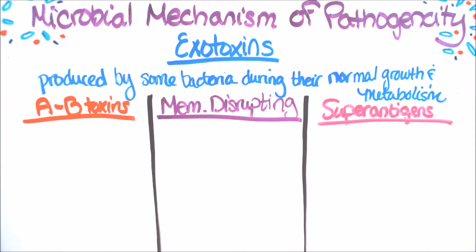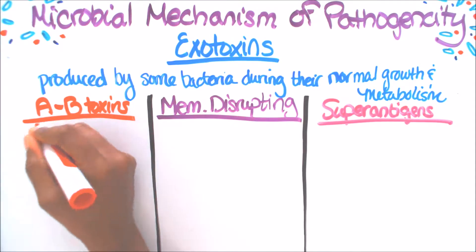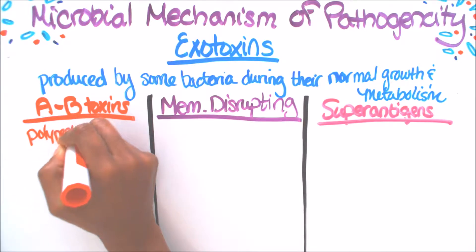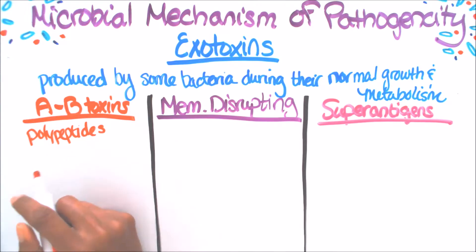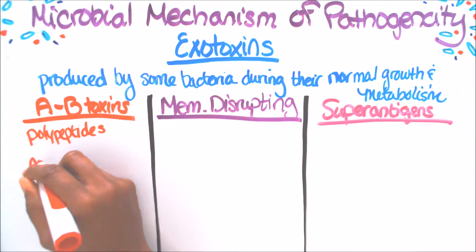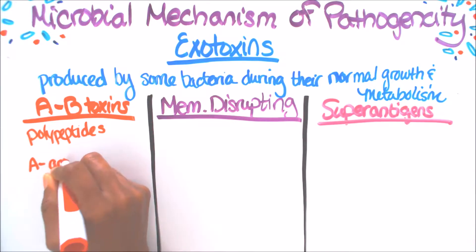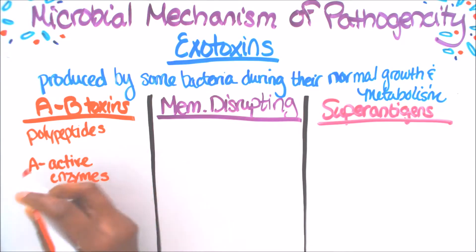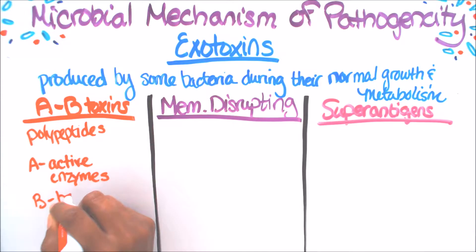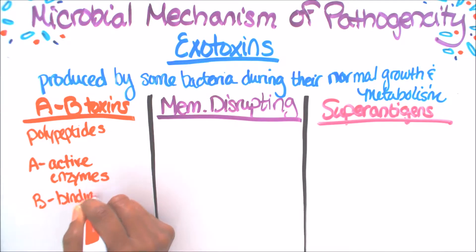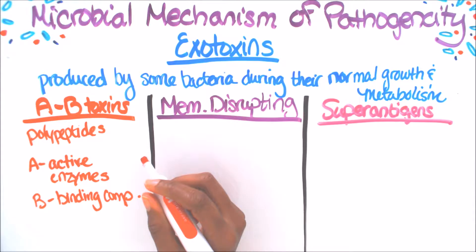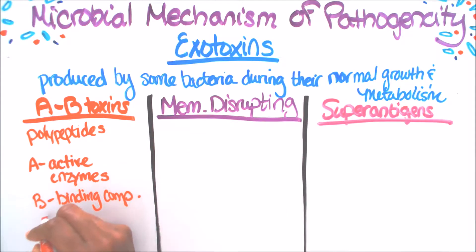First, we have AB toxins. AB toxins are polypeptides. The A portion of the toxin is an active enzyme, and the B portion is the binding component. An example of an AB toxin is diphtheria toxin.